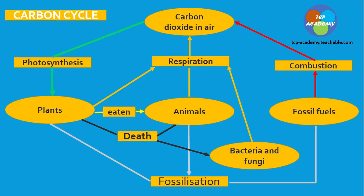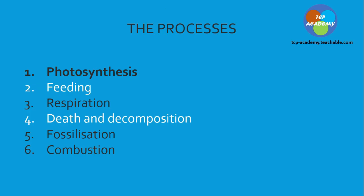A pictorial diagram shows carbon moving through: photosynthesis, plants eaten by animals, death and decomposition by bacteria and fungi, fossilization, fossil fuel, and combustion returning that carbon. The processes of a carbon cycle include photosynthesis, feeding, respiration, death and decomposition, fossilization, and combustion — a six-step process to move carbon through the ecosystem.